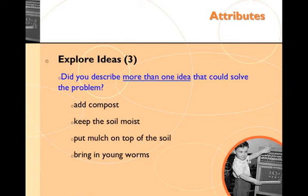The third attribute is explore ideas. Did you include two or more ideas that could solve the problem? Think of different possibilities — don't get stuck on one thing. The more ideas you put down, the more opportunity there is to earn that point. For example: did you add compost such as dead and decaying matter like lawn clippings? Did you add water to keep the soil moist? Did you bring in a new crop of young worms? These would be multiple ideas trying to solve the problem.